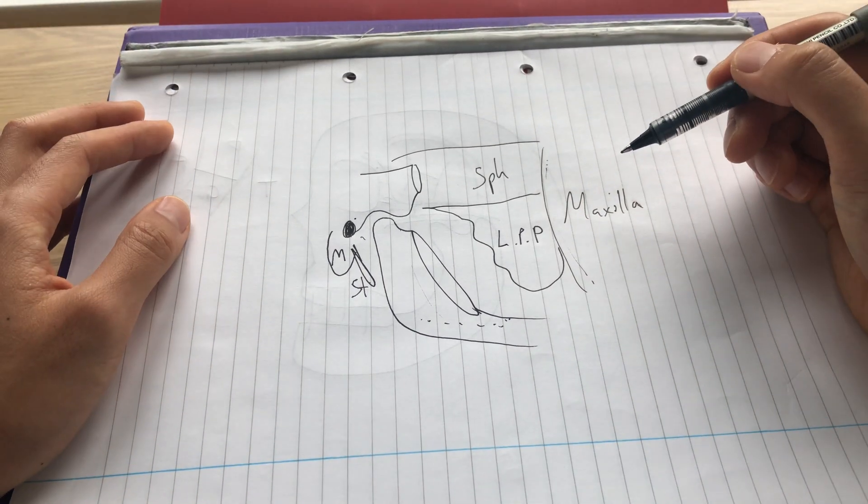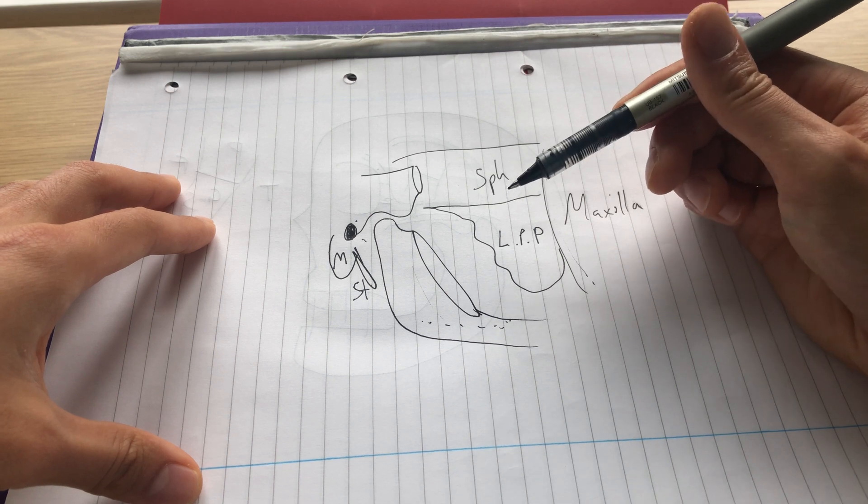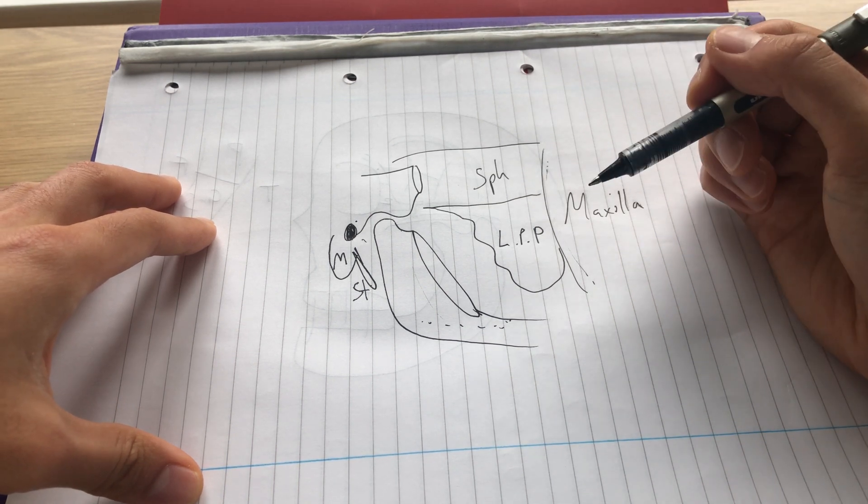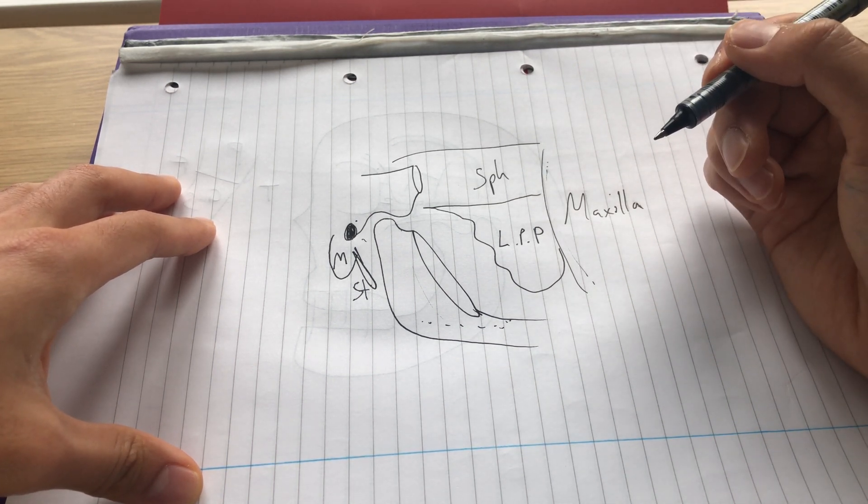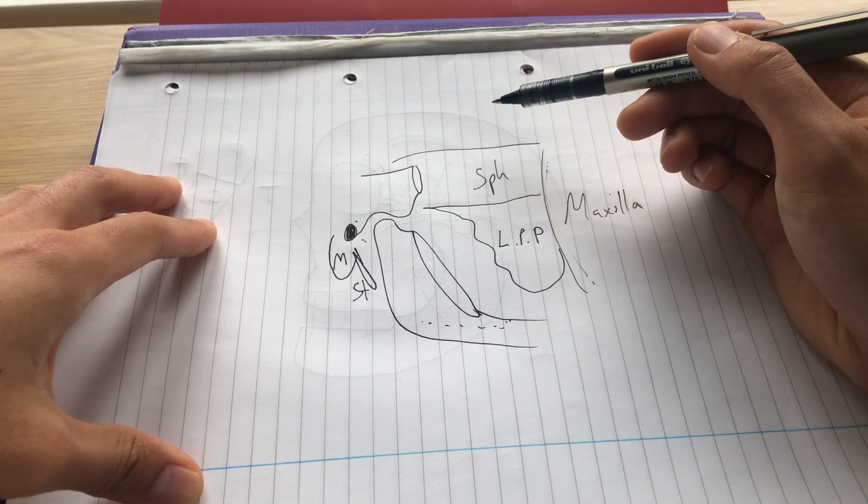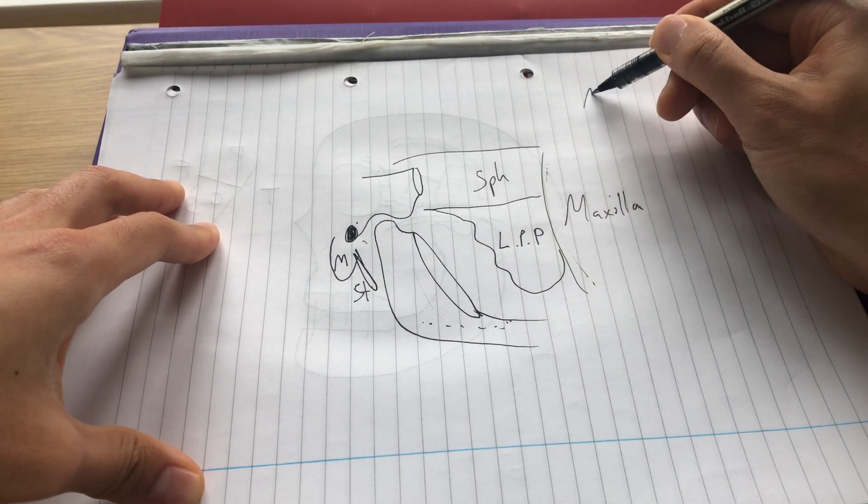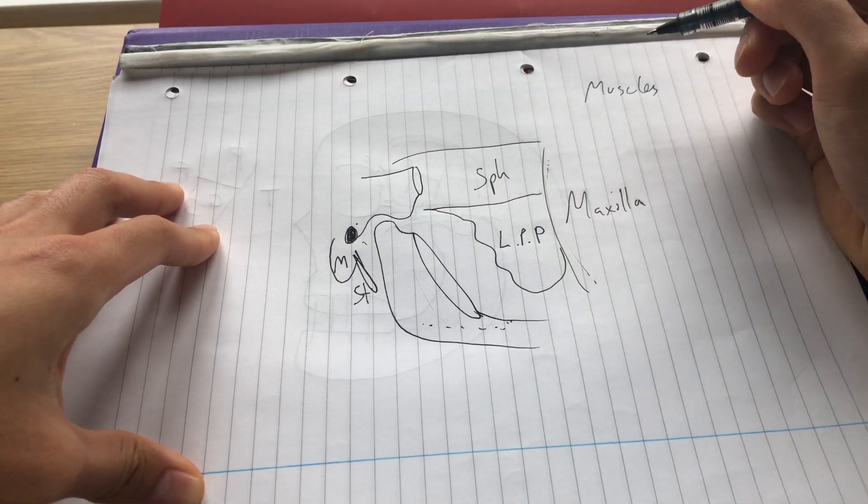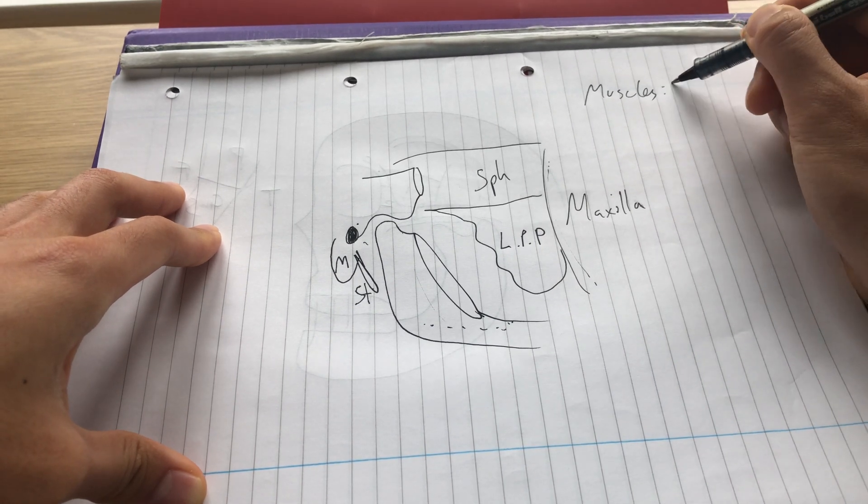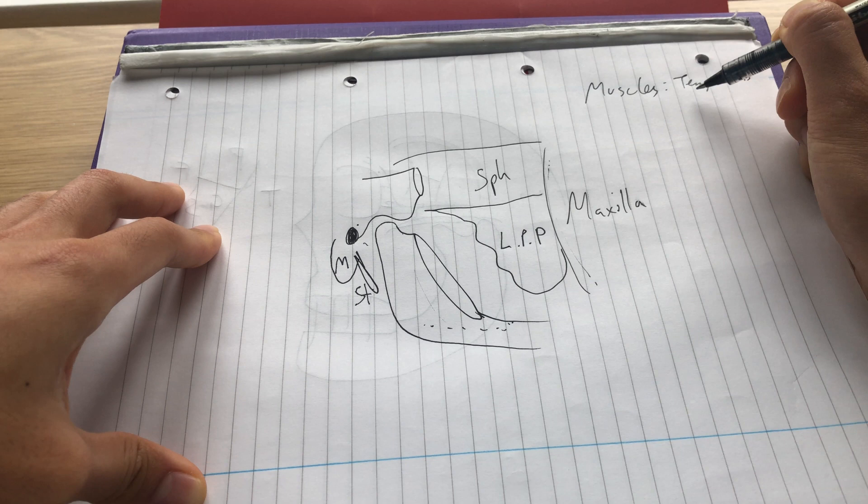So what's inside the infratemporal fossa? The contents include muscles, arteries, veins, and nerves. So the muscles include the inferior part of the temporalis, which will be running down here. Also the lateral and medial pterygoids.